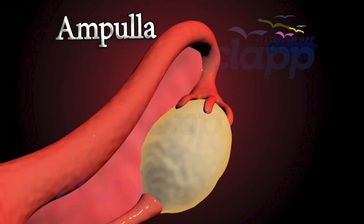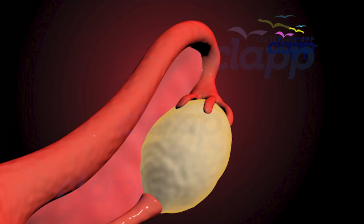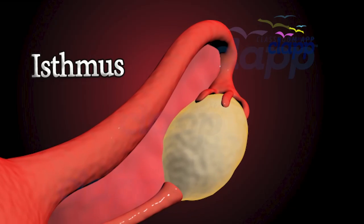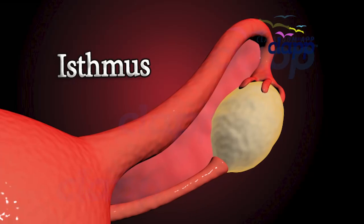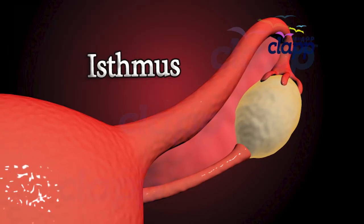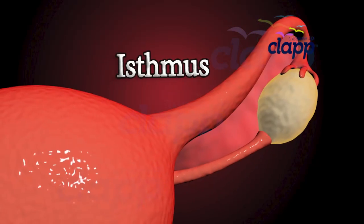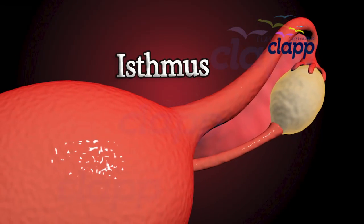Ampulla is the wider part of the oviduct next to the infundibulum. It is lined by ciliated epithelium. Isthmus is the short, narrow, and straight part that follows the ampulla and connects with the uterus.